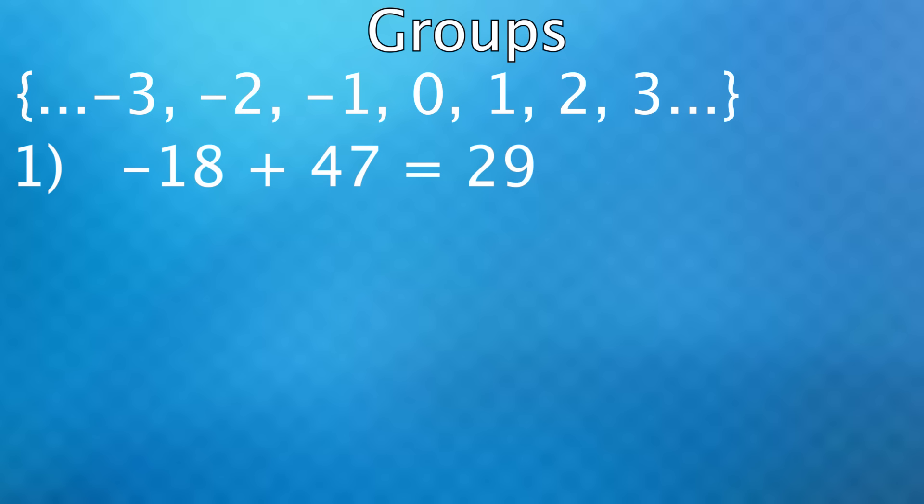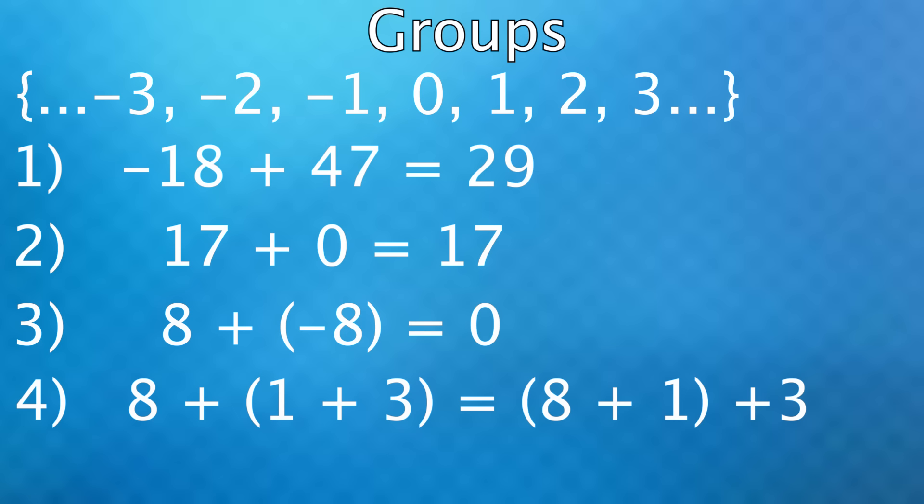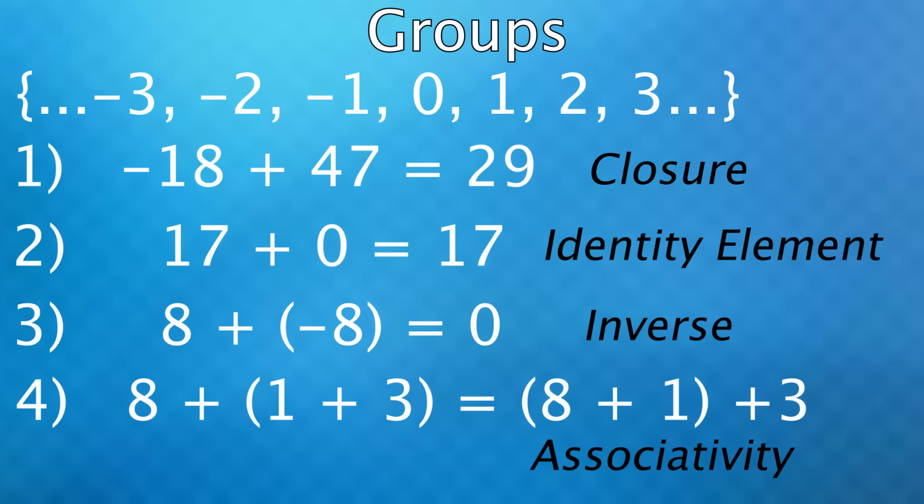Then there also exists an integer in the set, in this case zero, where if you add any number in the set to it, you get the same thing out. Next, for any number in the set, there exists another such that if you add them, you get that identity from before, which was zero in this case. And lastly, how you group certain numbers under addition does not change the result. These four properties of closure, an identity element, an inverse element, and associativity mean the set is a group.